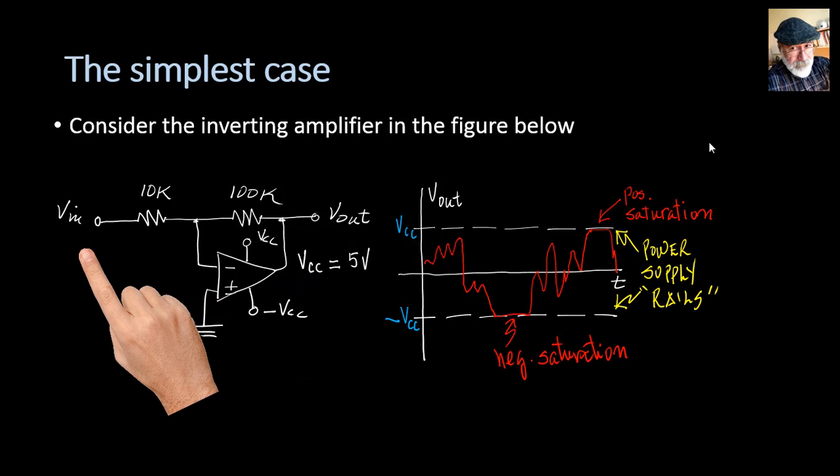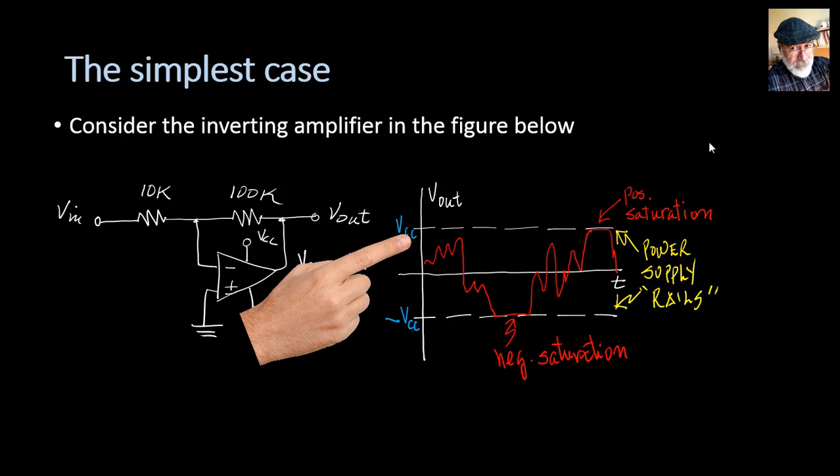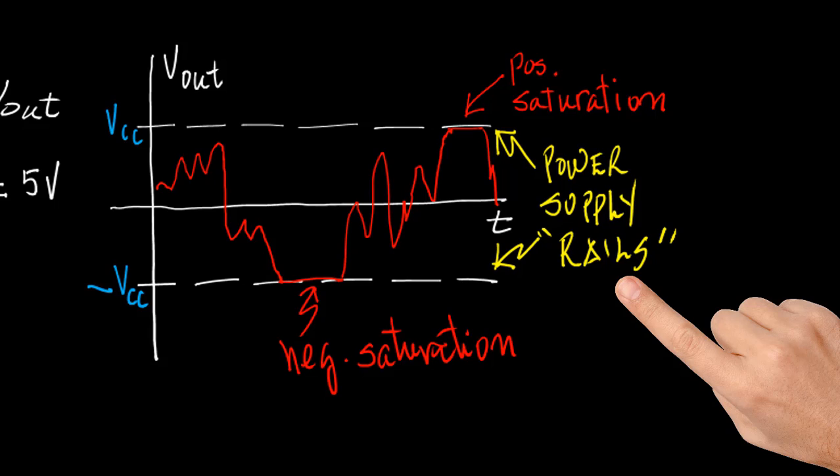Negative 5 to positive 5 volts in our case. We call those two voltages the rails of the power supply. The output Vout must stay within those two rails.